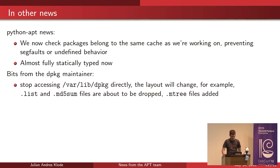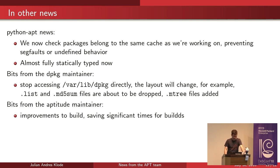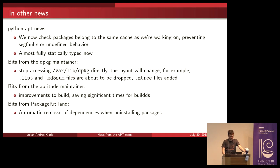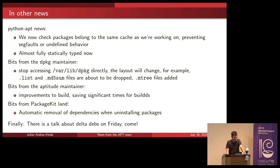From the dpkg maintainer: you should stop accessing var/lib/dpkg directly because the format will change. For example, the list and md5sums files will be dropped and replaced by mtree files. Aptitude has a new release now and also builds faster than it used to. For the PackageKit land, we can now automatically remove related unused dependencies when installing a package, which helps avoid cluttering your system with packages you no longer need. There will also be a talk on Delta Debs on Friday.